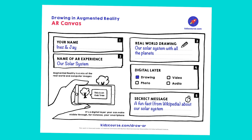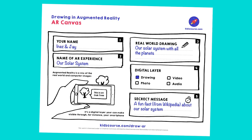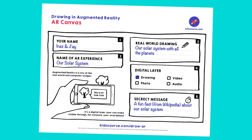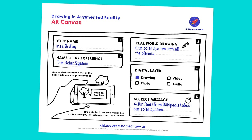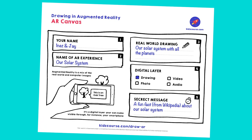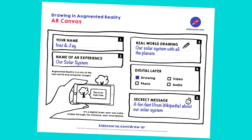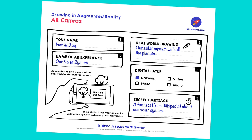Your turn. Fill out what kind of real drawing you are going to make, what digital layer you will add, and what text or secret message you will add to it. Pause the video for a minute while you fill out the three fields.